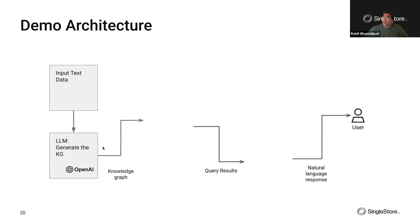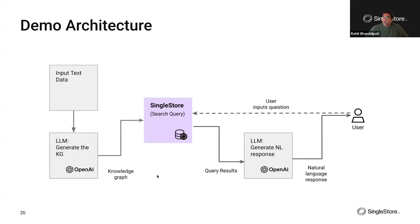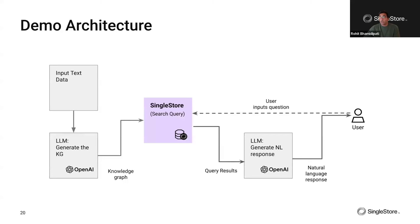Here's the architecture: input text data is sent into an LLM — ChatGPT — to generate the knowledge graph, which is then stored in the SingleStore database. On the other hand, the end user asks a question as a search query. The query is executed in SingleStore, results are sent to the LLM to generate a natural language response, which is then sent back to the user. The key questions are: how do we store these knowledge graphs in SingleStore, and how do we query them?